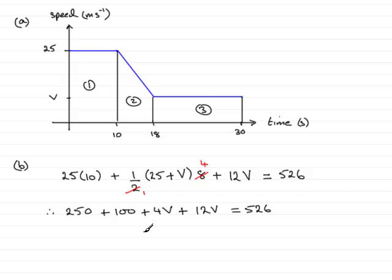If I group together the V's, we therefore have 16V. I can see here that I've got 350, so if I take that from both sides, 526 minus 350 is 176. And if I divide both sides by 16, I get V equals 176 over 16, and doing that on a calculator, I end up with V equaling 11.